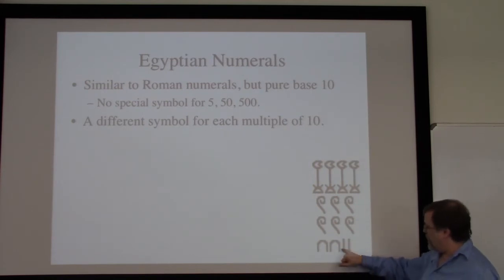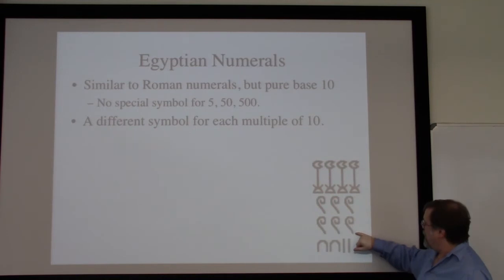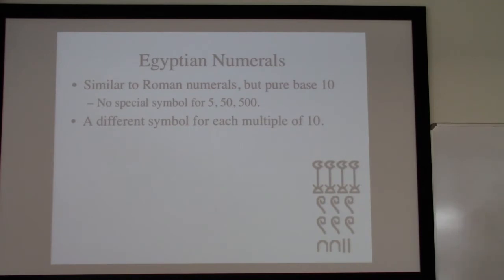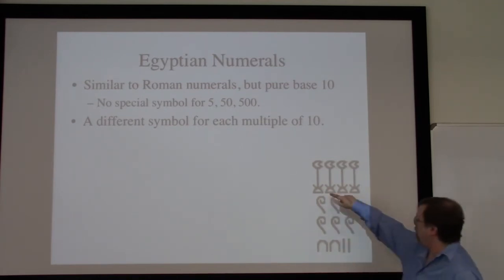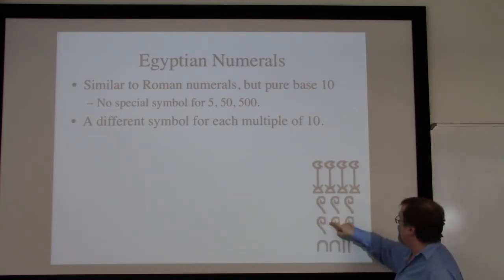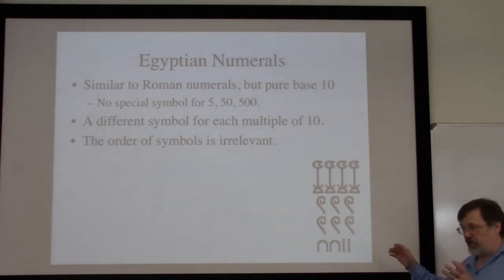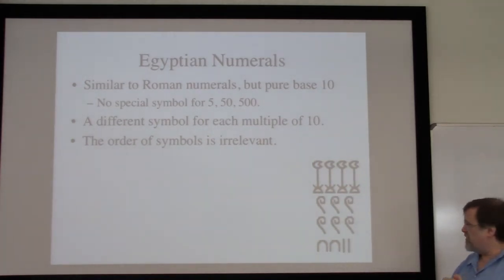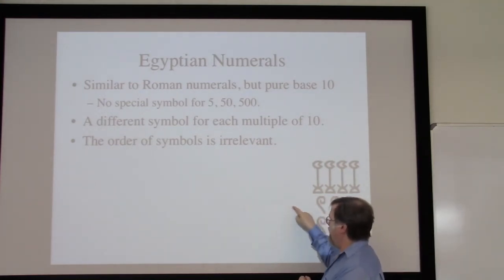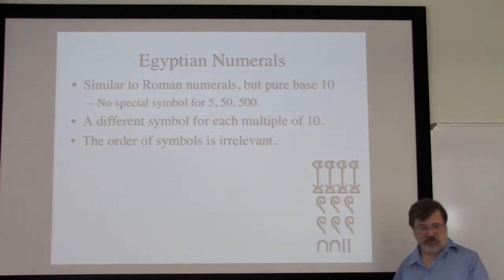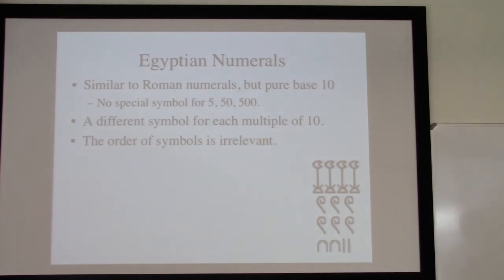In the number I have over here: this is the symbol for a one, this upside-down U is the symbol for a 10, this is a scroll representing 100, and this is a water lily representing 1000. It doesn't matter whether I put four in a row or in a double row — it all represents the same number. We can read it either right to left or left to right, because we're just adding all the numbers up. This is important because in Egyptian hieroglyphics, sometimes the reading goes right to left, and other times it goes back and forth across the script.